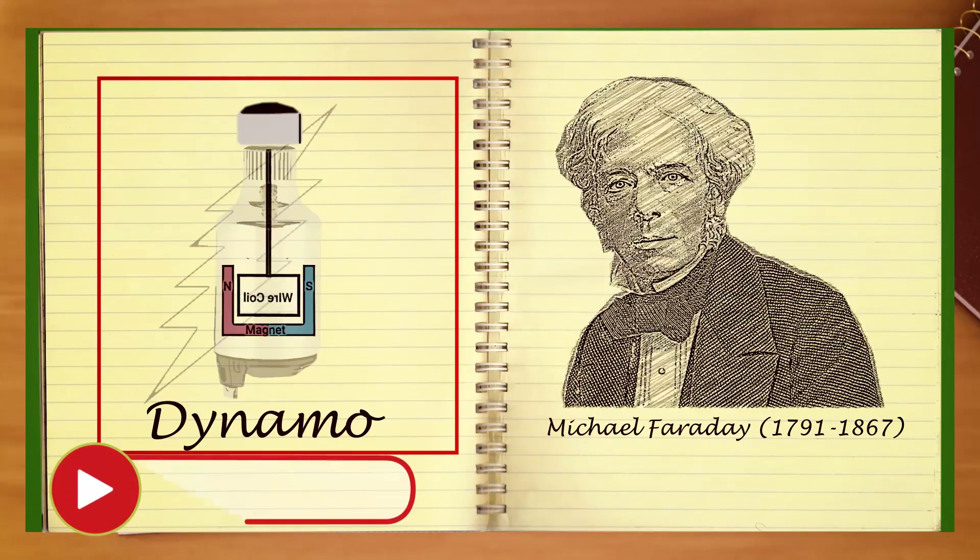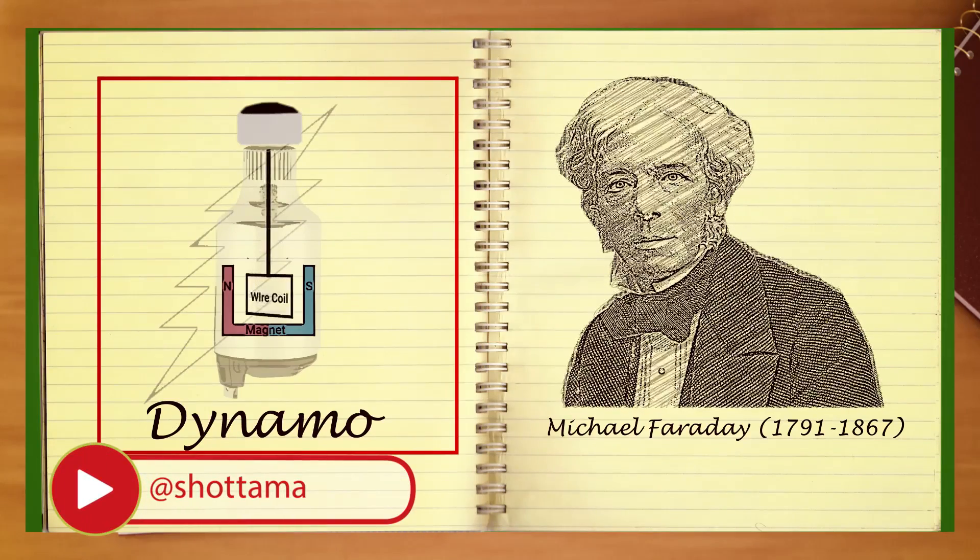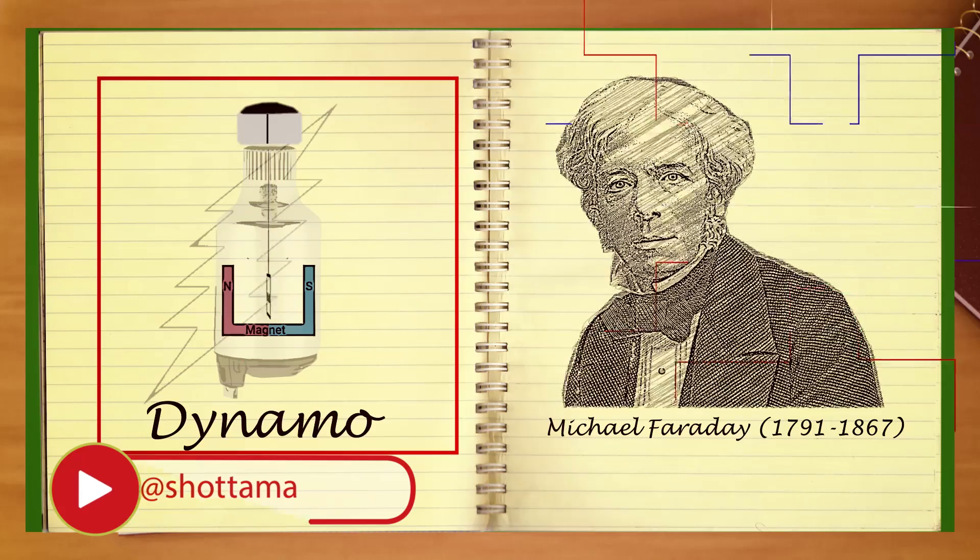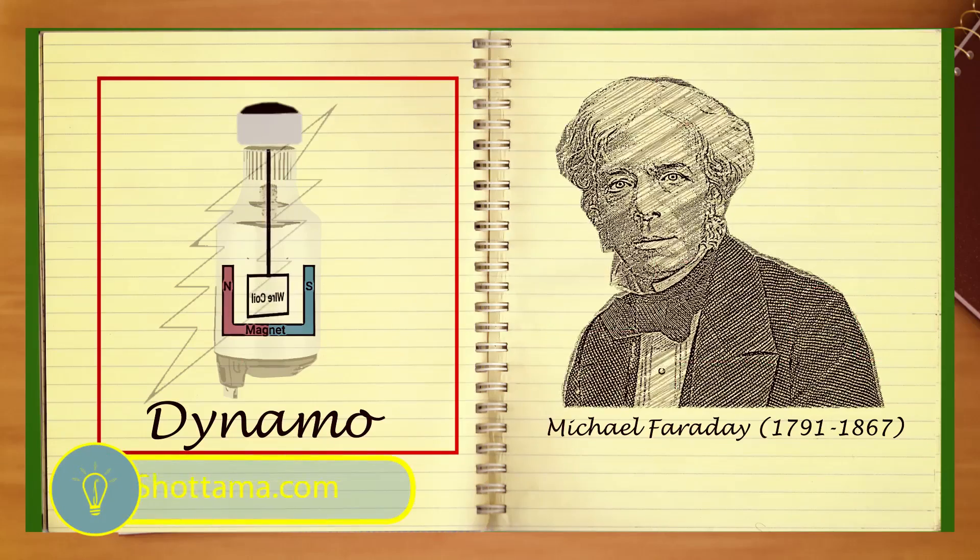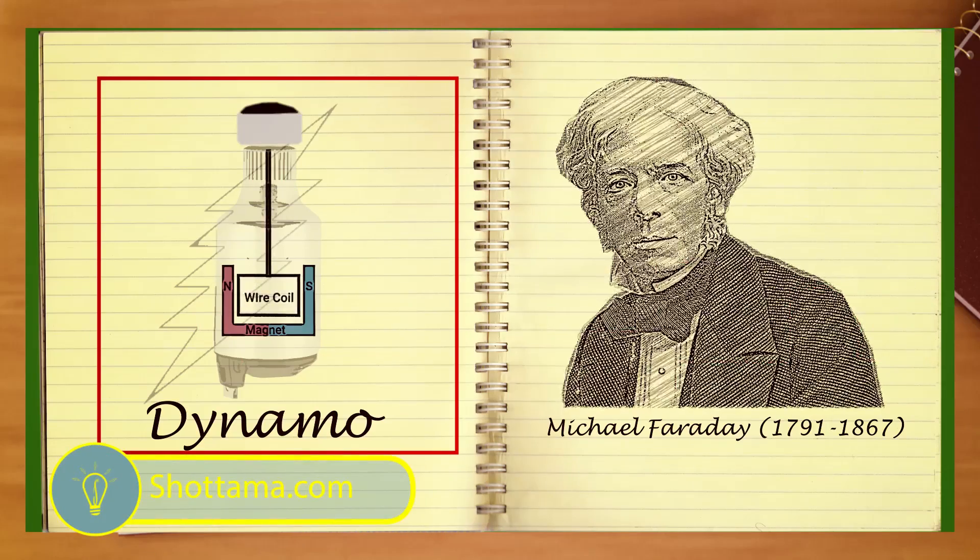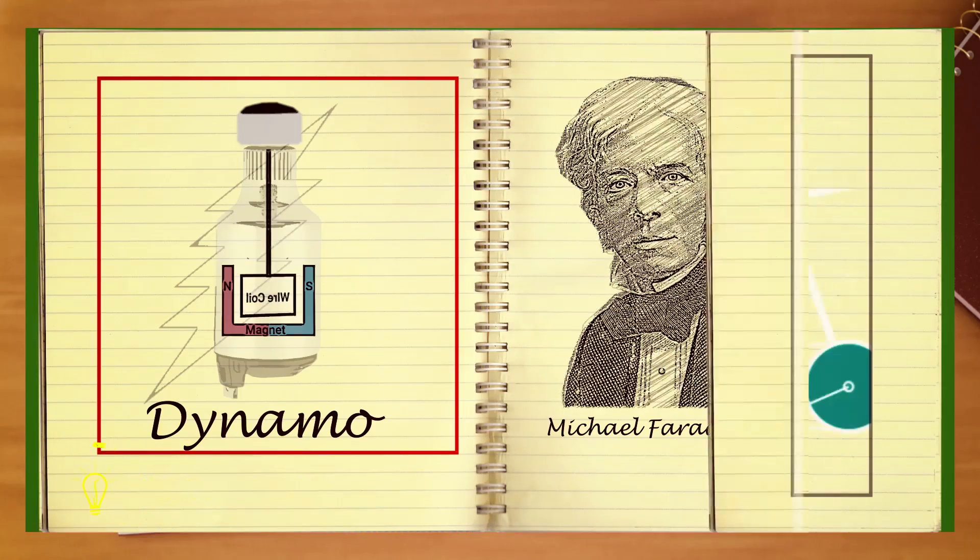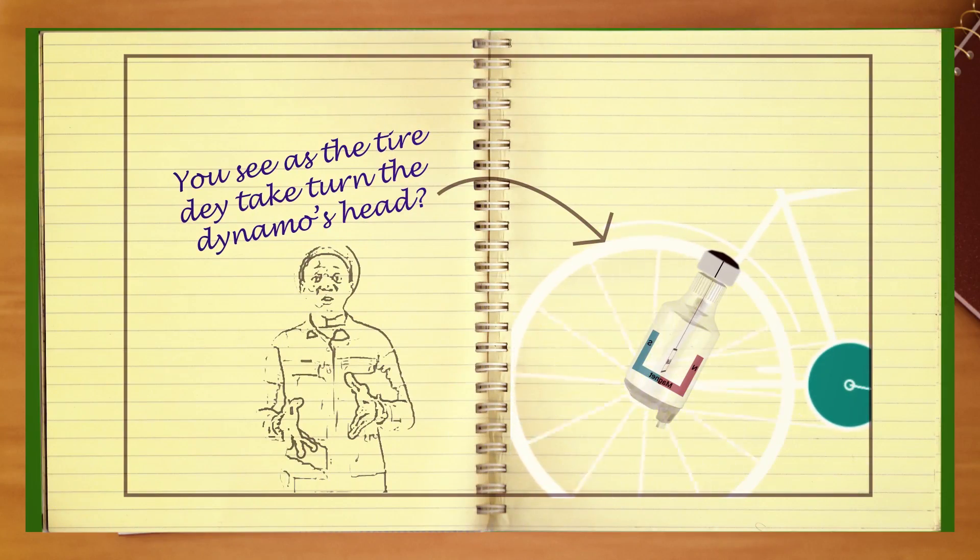This man Michael Faraday in the early 1830s discovered that anytime metal plates turn inside magnets, they generate electricity which we use to power lights.